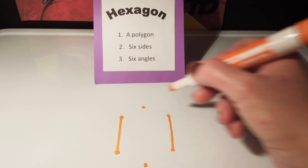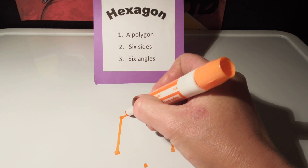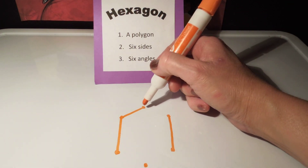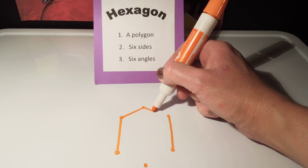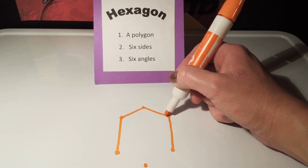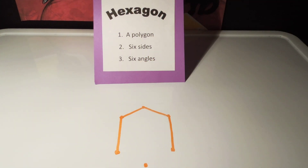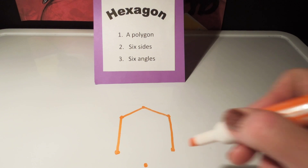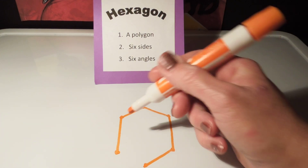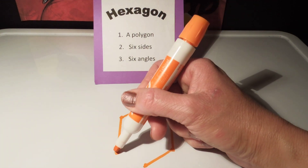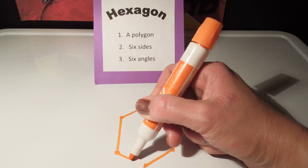Now I'm going to connect this point with this point, and this point with this point, making diagonal line segments. Then I'm going to connect this point with this point, and this point with this point.